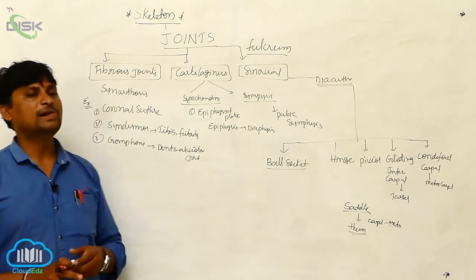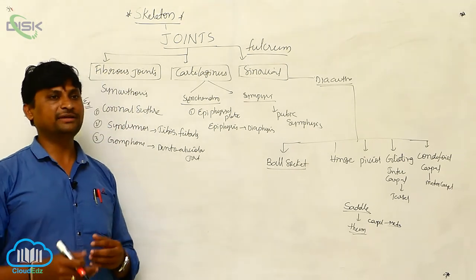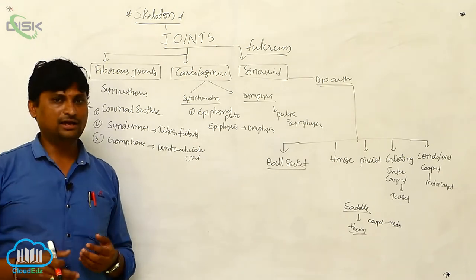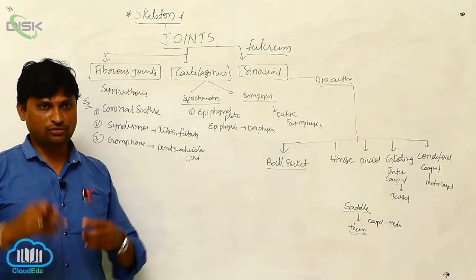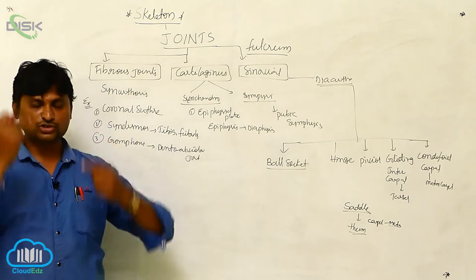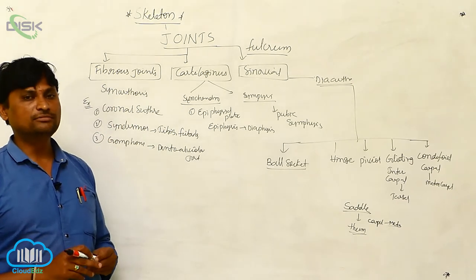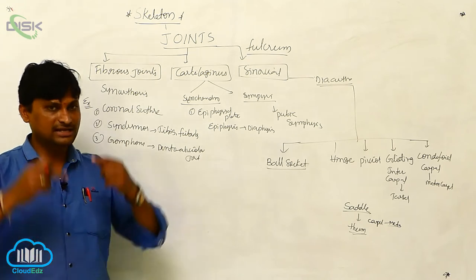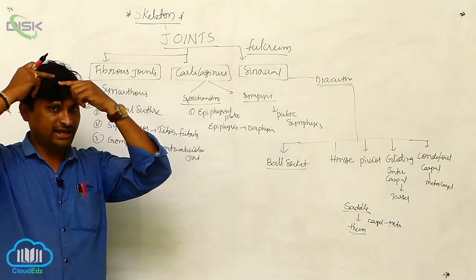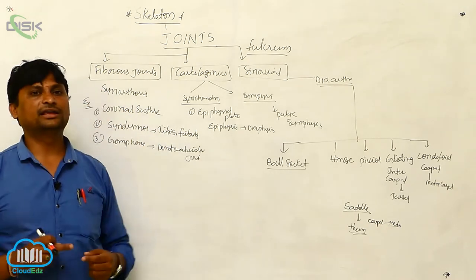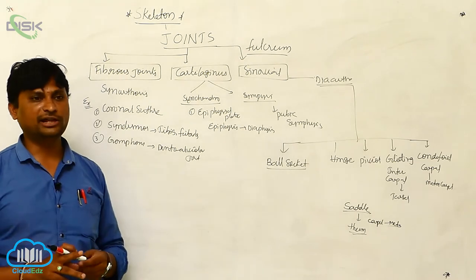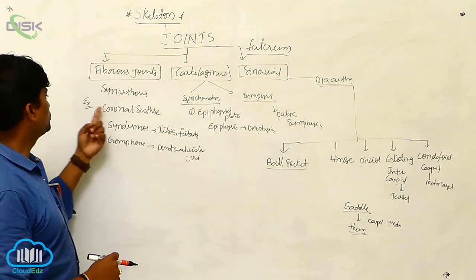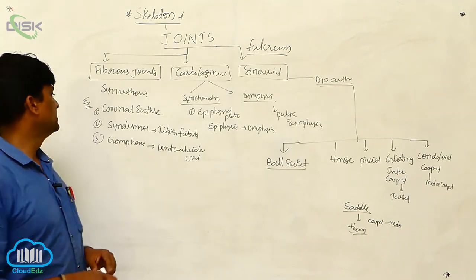The first example of fibrous joints is the coronal suture. The coronal suture connects the frontal bone and the parietal bones. In the center there is a suture that attaches the two bones, and we call this the coronal suture. This type of joint does not show any articulation or any type of movement.